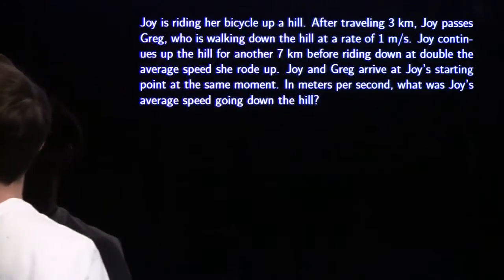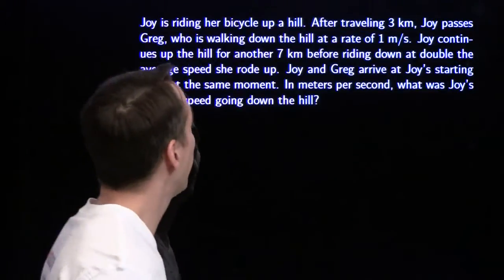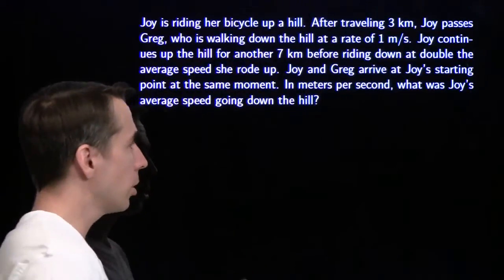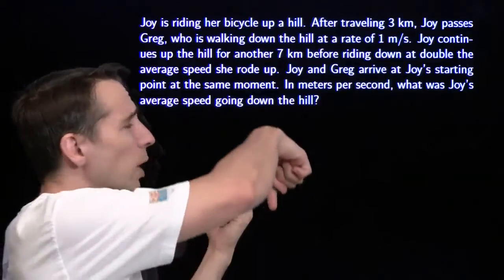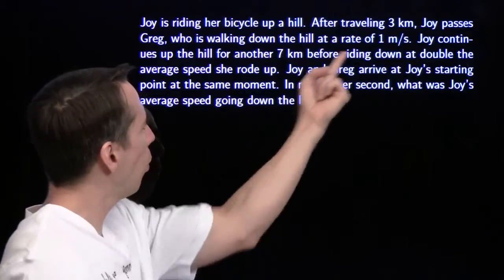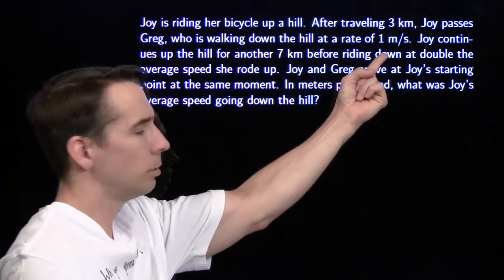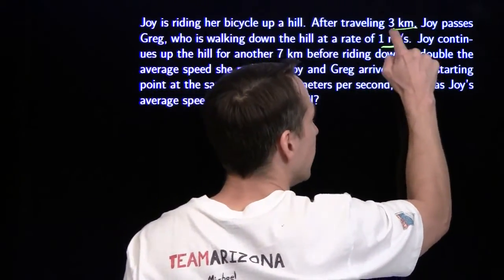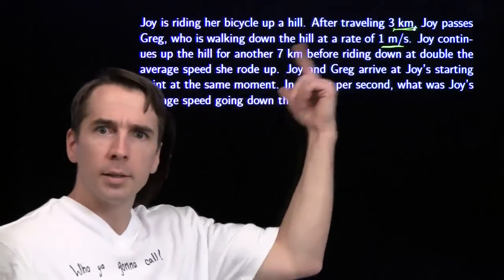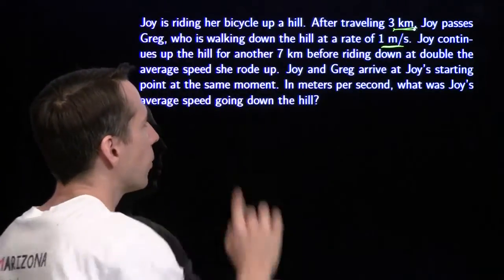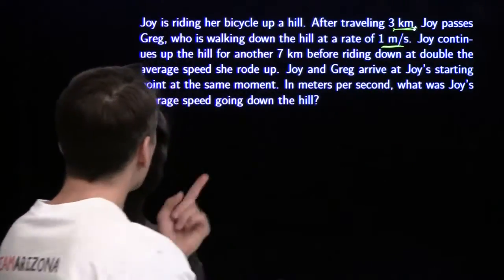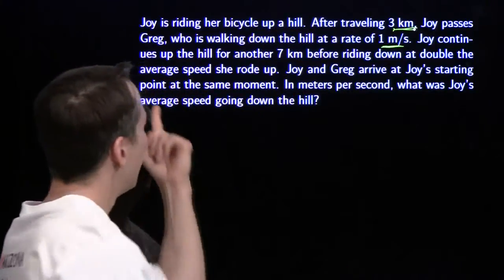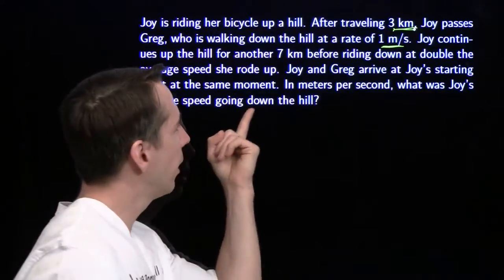Let's try this picture-drawing tool on another problem. Joy's riding her bike up a hill. She goes for three kilometers going up the hill, passes Greg who's walking down the hill at one meter per second. I've got meters and kilometers, so I'm going to underline that so I remember that the units are different. Joy's going to continue going up the hill for another seven kilometers, and then she's going to come down the whole hill at twice the speed that she went up.